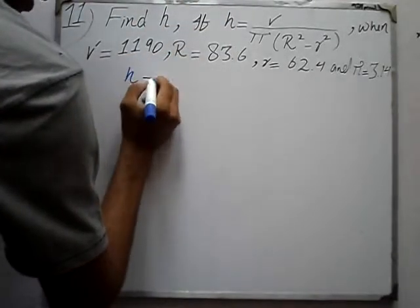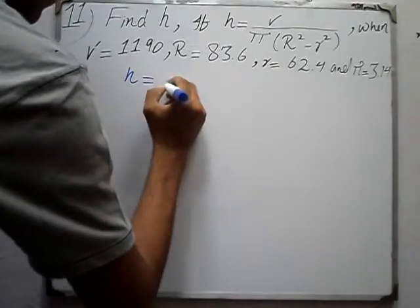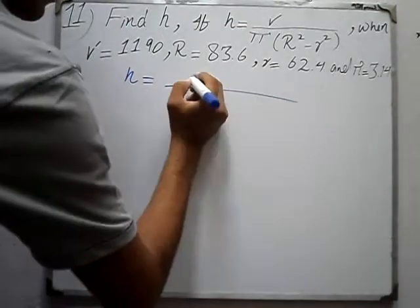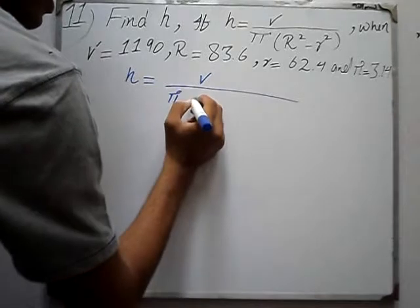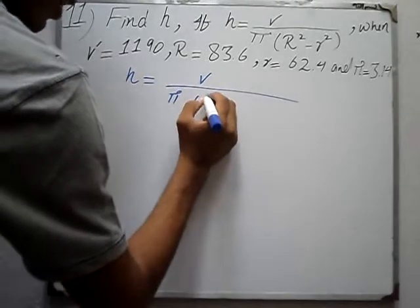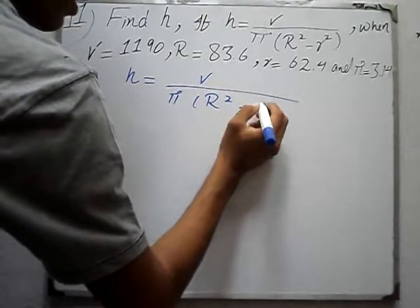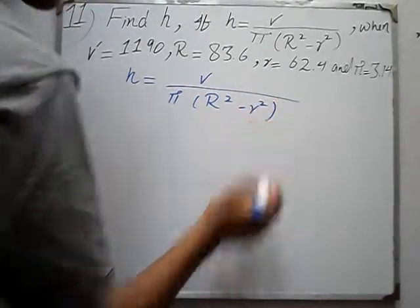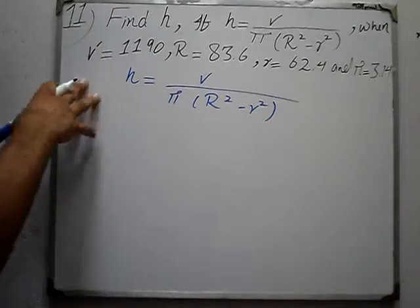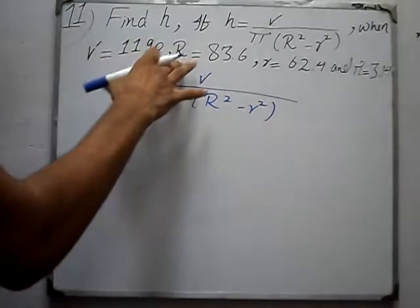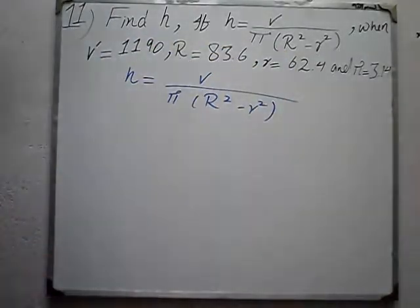h is equal to v times pi into r squared minus r squared. Given h, r given h — substituting the given values of v and r.